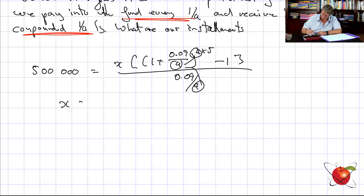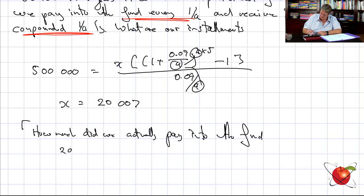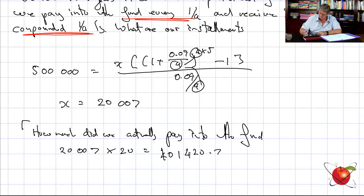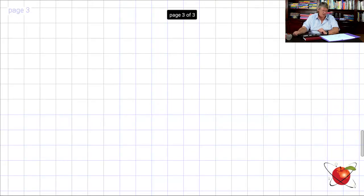A quick check: how much did we pay in total? We made 20 quarterly payments of 20,007, giving a total of 401,420.71. That's less than 500,000 — which makes sense because we earned interest on top of it. Always verify that your total paid is less than the future value.